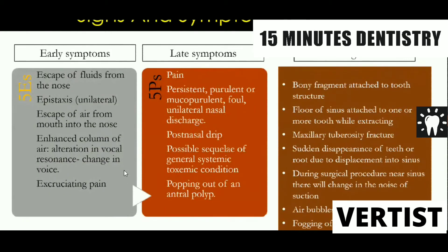What are the signs and symptoms of oro-antral communication — especially early and late symptoms? Early symptoms: the patient will immediately report escape of fluid from the nose, regurgitation of fluid immediately after extraction, epistaxis due to bleeding within the maxillary sinus coming out through the nostrils, escape of air from mouth into nose, and enhanced column of air creating altered voice. In some cases there will be severe pain.